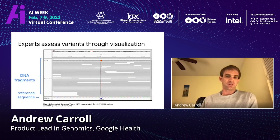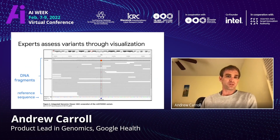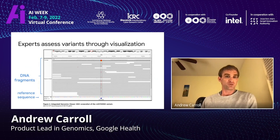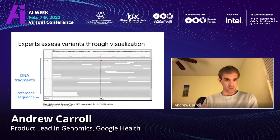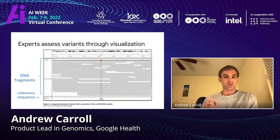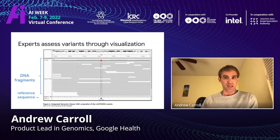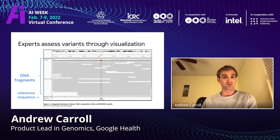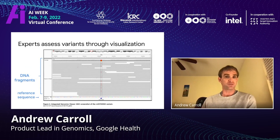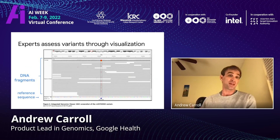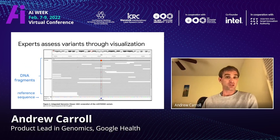DeepVariant leverages the fact that when a human expert looks at data, they often pull it up in something called a genome browser, which represents the individual sequence reads — those are the gray bars in this plot. Differences relative to the reference are colored here. You can see a T, which is a heterozygous variant in this case. A human will often use this to quality control the variants that are identified, but because there are 3 billion characters in the genome, this can only be done at scale in a computational manner.